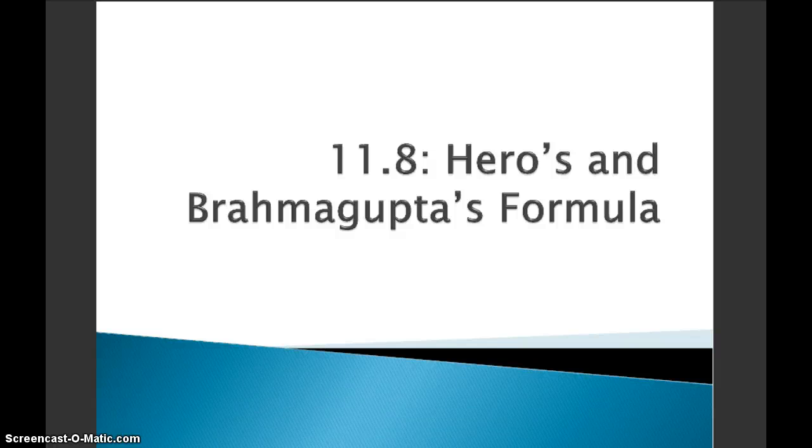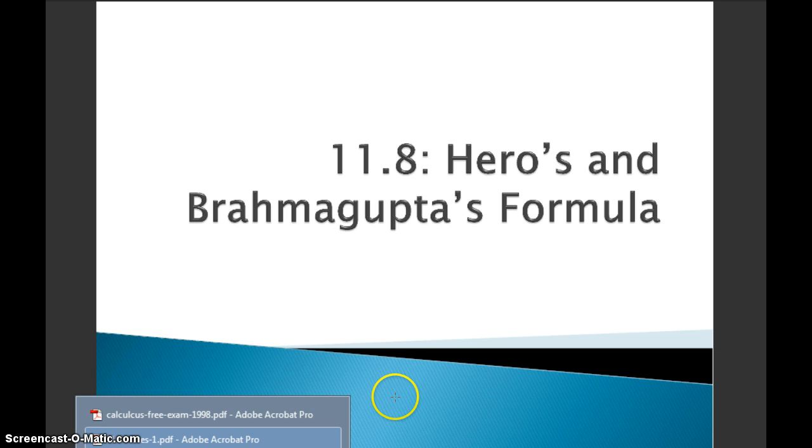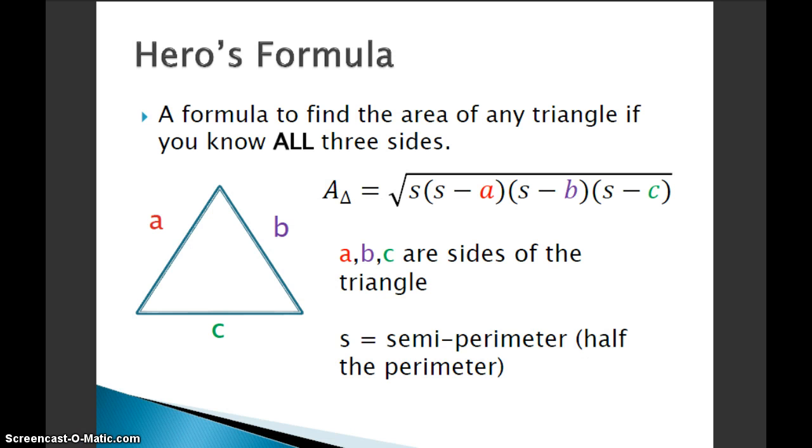Welcome to section 11.8. Today we are looking at some special formulas that we can use to find the area of any triangle and a certain number of different types of quadrilaterals called Hero's Formula and Brahmagupta's Formula. Now these formulas are going to be very similar to each other, so if you've got one down pat, the other one should be pretty good too.